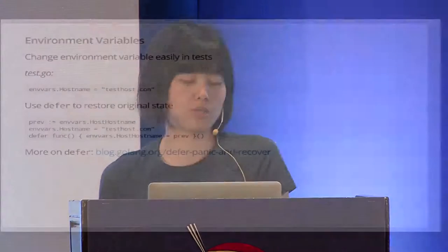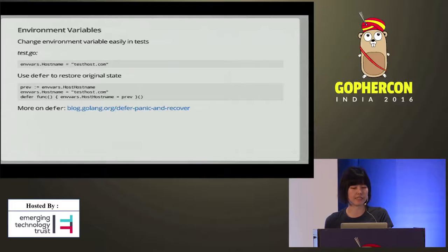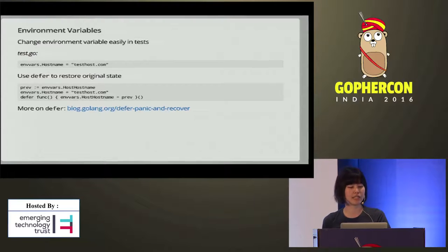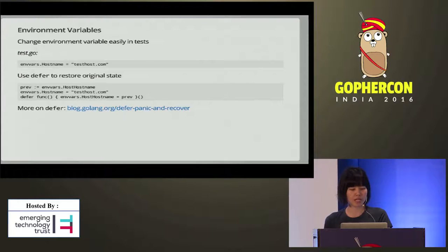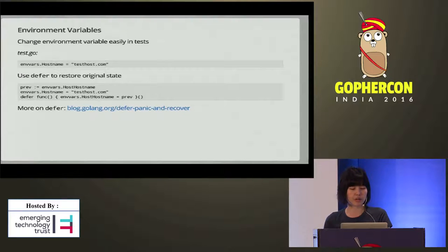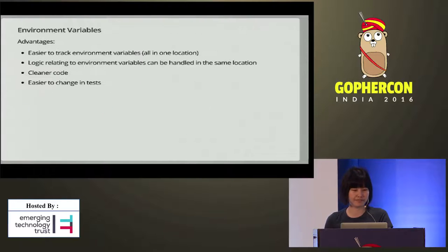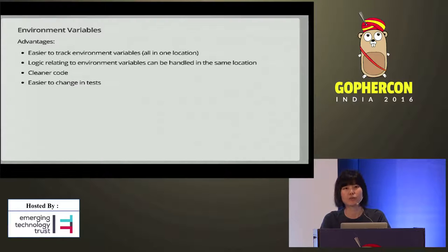One benefit is that we can change the environment variable easily in tests. For example, if you want to change your hostname in a test, you can easily change the environment variable for hostname and then use defer to restore the original state. For more on the defer statement, you can read the blog post on defer, panic, and recover. The advantage of putting all our environment variables into a package is that it's easier to track them — they're all in one location, and all the logic and checks can be handled in the same place.